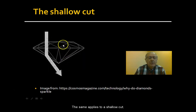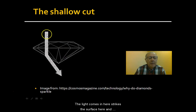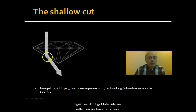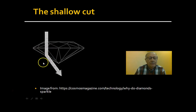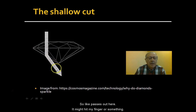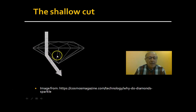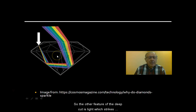With a deep cut we don't get the maximum amount of sparkle. The same applies to a shallow cut — the light comes in, strikes this surface, and again we don't get total internal reflection. We have refraction and so light passes out here and might hit a finger or something.